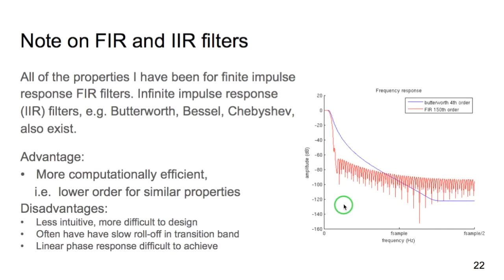So all the properties I've been discussing so far are for finite impulse response, or FIR, filters. There are also infinite impulse response filters, with names like Butterworth, Bessel, or Chebyshev. These are more computationally efficient, so they can achieve similar properties with lower orders. But they are more difficult to design and are less intuitive. And their detailed nature is beyond the scope of this lecture.